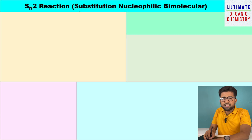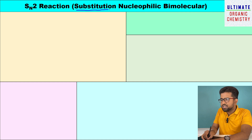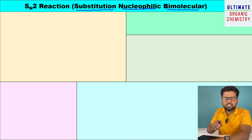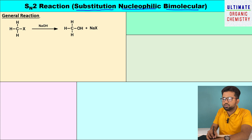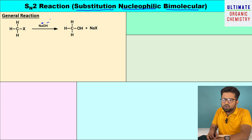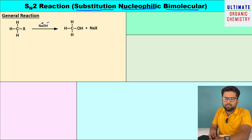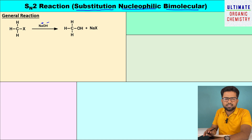First let me explain the term SN2: S stands for substitution, N stands for nucleophilic, and 2 stands for bimolecular. With this basic idea, let me explain SN2 reaction with a general example. I have taken methyl halide here, and this methyl halide is treated with sodium hydroxide. Sodium hydroxide ionizes into Na⁺ and OH⁻, so this OH⁻ is acting as a nucleophile. The nucleophile attacks the methyl halide, leading to the formation of methanol, and sodium halide is obtained as a byproduct.